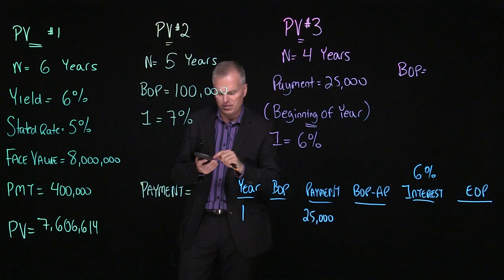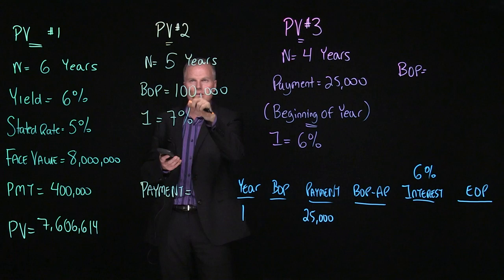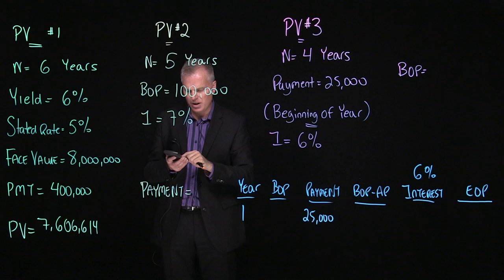So again, making sure my calculator is clean. So I hit second, FV, or also known as second, CLR, TVM. And then I put in the data. So 5N, beginning of period is $100,000. So that'll be $100,000 PV. I'm going to have 7IY.